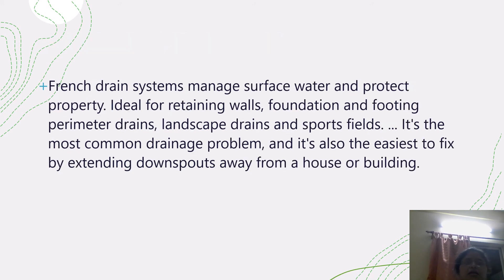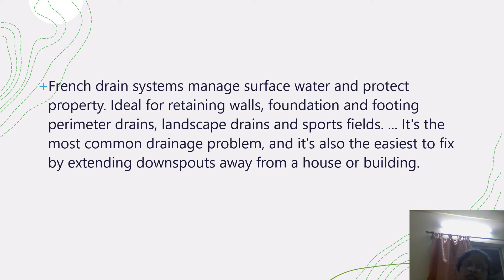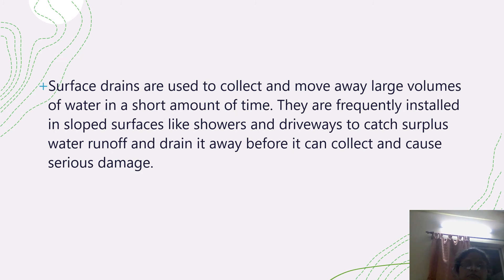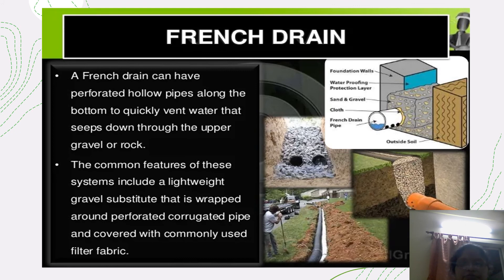French drainage system manages surface water to protect property — ideal for retaining walls, foundations, footings, perimeter drains, landscape drains, and sports fields. It is the most common drainage problem and also the easiest to fix. Surface drainage systems are installed on the slope of the surface, like a shower surface. Surface drainage examples include driver sketch surface, water runoff drain, before it collects and causes serious damage.